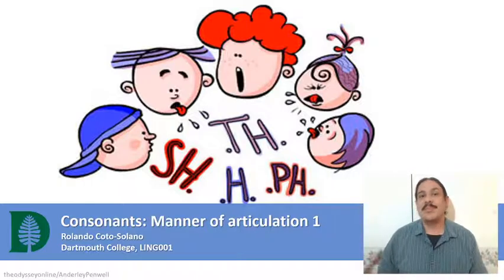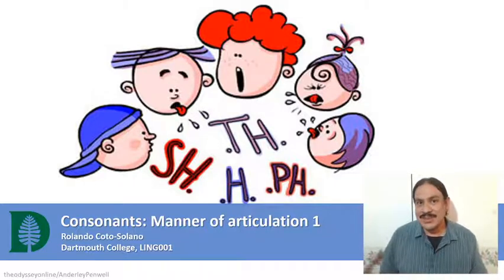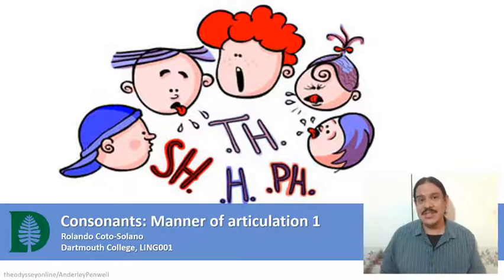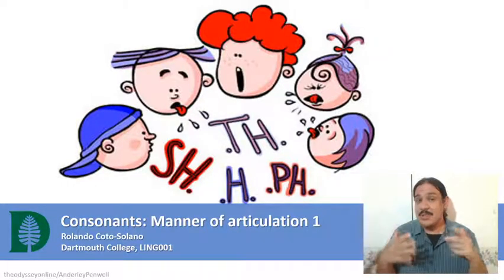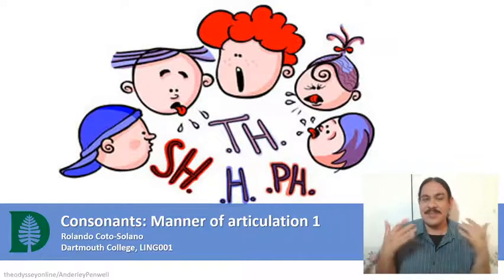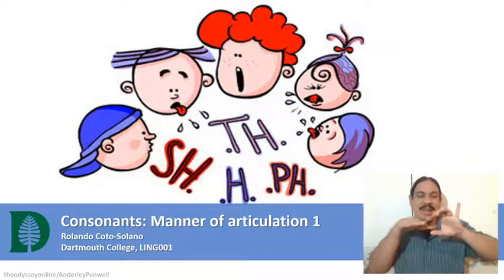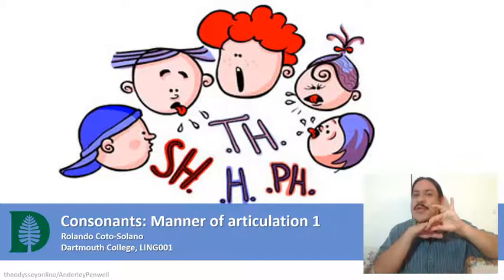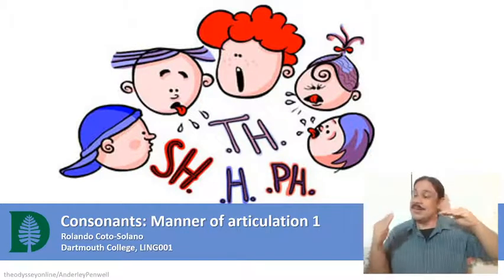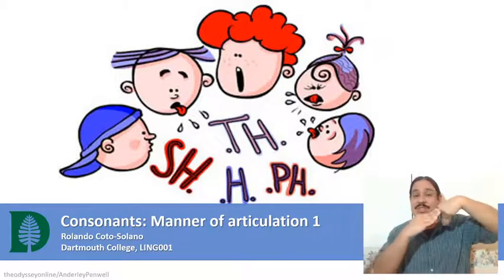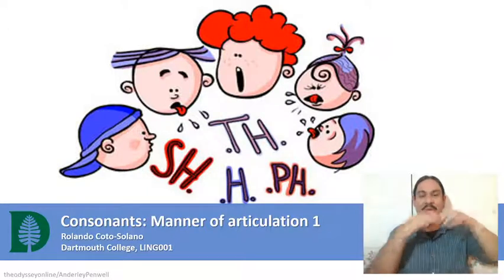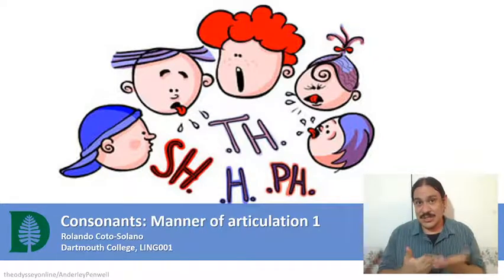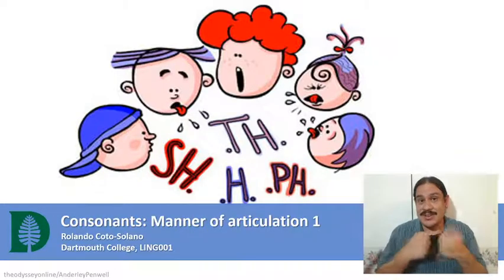In the last couple of videos we've been looking at places of articulation. A place of articulation is somewhere in your mouth where there's contact between two articulators. For example, your tongue and your teeth when you're saying th, or the tip of your tongue and the alveolar bridge when you're saying s or t in telephone. All these are places of articulation which is where some articulators are interacting.